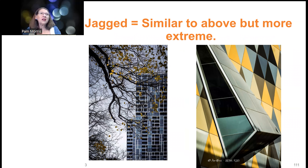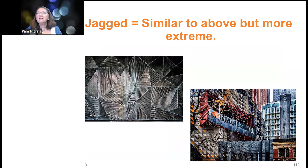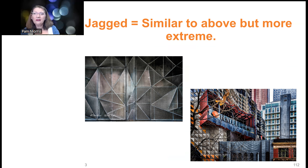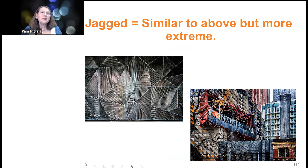Jagged lines are similar to diagonals in that they have energy associated with them, but they take it to the next level — things that aren't regular put a little more energy into the image. When you're out looking for things to photograph, see if you can find things in the landscape that naturally have each of these characteristics. A garage door to a car park is a fairly boring image in itself, but all of those lines and the chaos they create give the image energy.